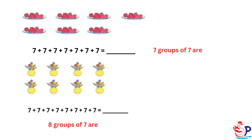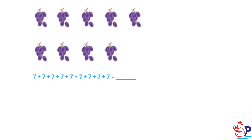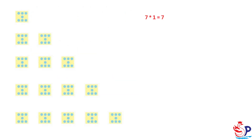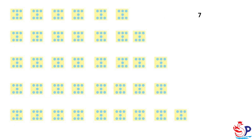9 groups of 7 are: 7 plus 7 plus 7 plus 7 plus 7 plus 7 plus 7 plus 7 plus 7 equals; 9 groups of 7 are; 9 times 7 equals. Build the 7 times table by counting the number of beads in the box: 7×1=7, 7×2=, 7×3=, 7×4=, 7×5=, 7×6=, 7×7=, 7×8=, 7×9=, 7×10=